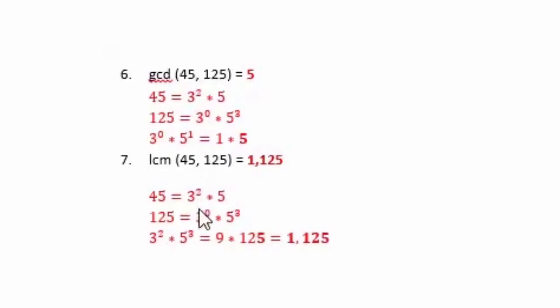And then for the least common multiple, now you're going to compare these exponents and take the one that is larger. Again we want both of these numbers to divide into it evenly. The 2 is greater than the 0 so we take this 3 to the 2nd. The 3 is greater than the 1 so we're going to take the 5 to the 3rd. 3 to the 2nd times 5 to the 3rd is going to eventually equal 1,125.